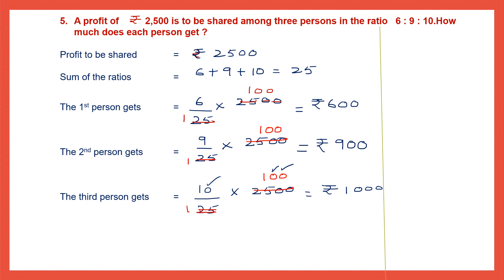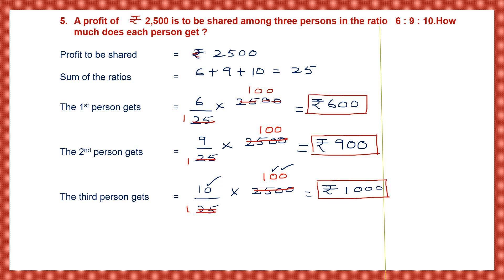Now we know how much each person gets: the first person gets 600 rupees, the second person gets 900 rupees, and the third person gets 1,000 rupees. Check your answer by adding all three — you must get 2,500 rupees. We'll stop here for now. In our next video, we'll continue with the other exercises. Thank you, children.